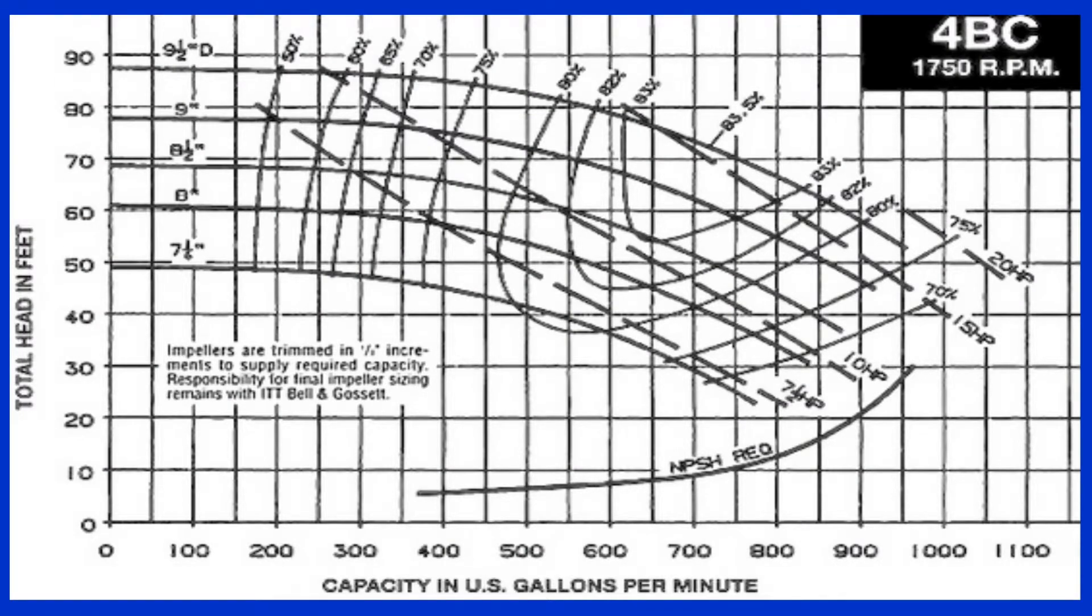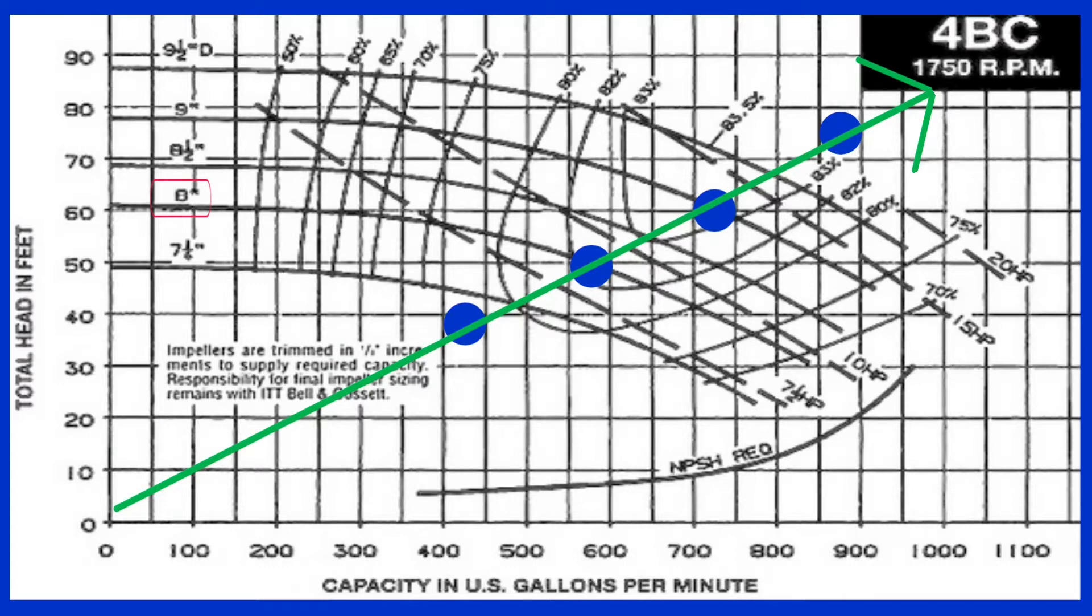We can now plot the TDH on the graph for our given flow rates, and see which is closest to intersecting the pump curve for our given pipe. It looks like the TDH for the flow rate of 575 gallons per minute is almost dead on to hit our pump curve for an 8-inch diameter pipe.